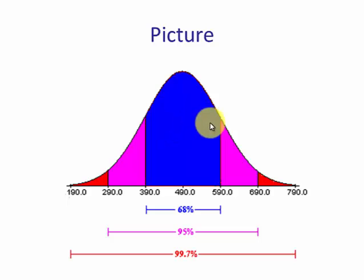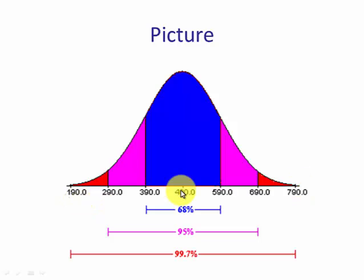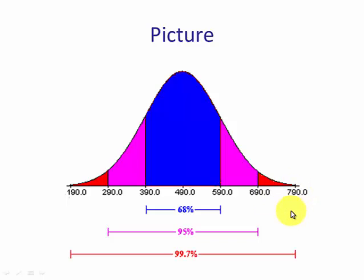Second question: if a student scores 790 on the SAT, then they are above 99.7% of the data. According to the empirical rule, 99.7% of SAT scores are between 190 and 790. So this student is scoring better than the top 1%.